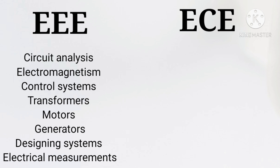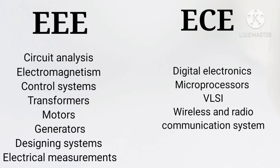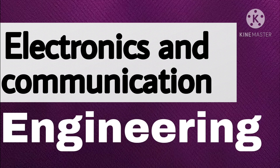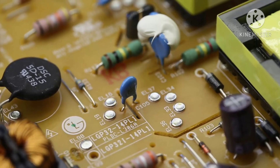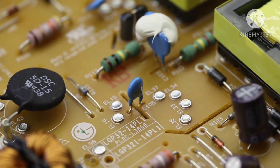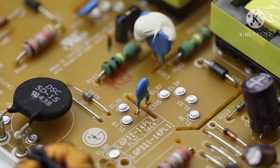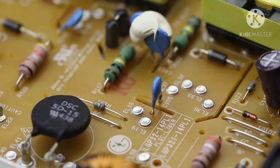In ECE, there are also subjects like digital electronics, microprocessors, VLSI, and wireless and radio communication systems. In the EEE vision, only electronics and electricals core subjects are covered, including electronic devices analysis and network study.